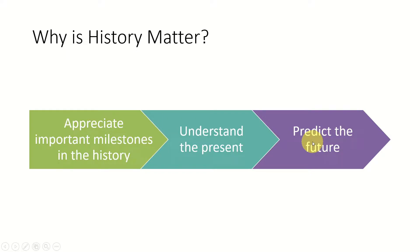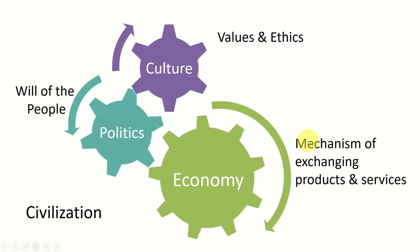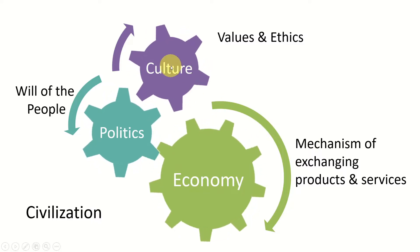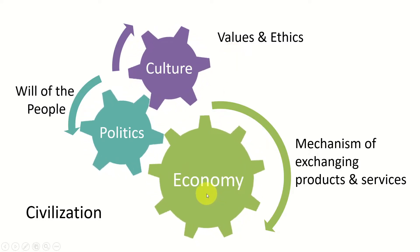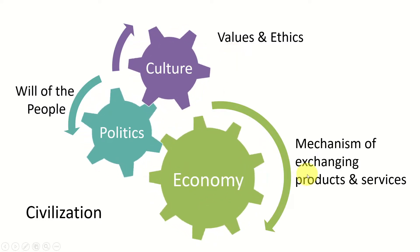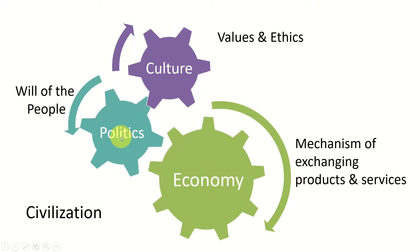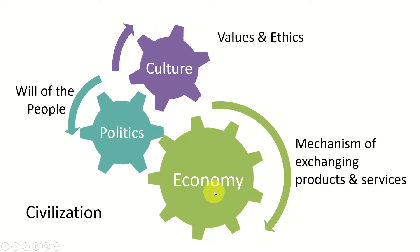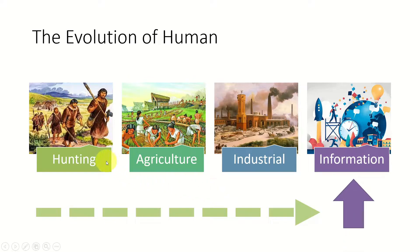We want to build systems and businesses for the future, and that is why we are discussing evolution. We can understand human civilization using three key factors: the cultural aspect, which determines values and ethics; the economic aspect, which determines the mechanism of exchanging products and services; and in a democratic world, politics binds the cultural and economic will of the people. We can identify four main eras: the hunting period, the agricultural era, the industrial era, and the information era.